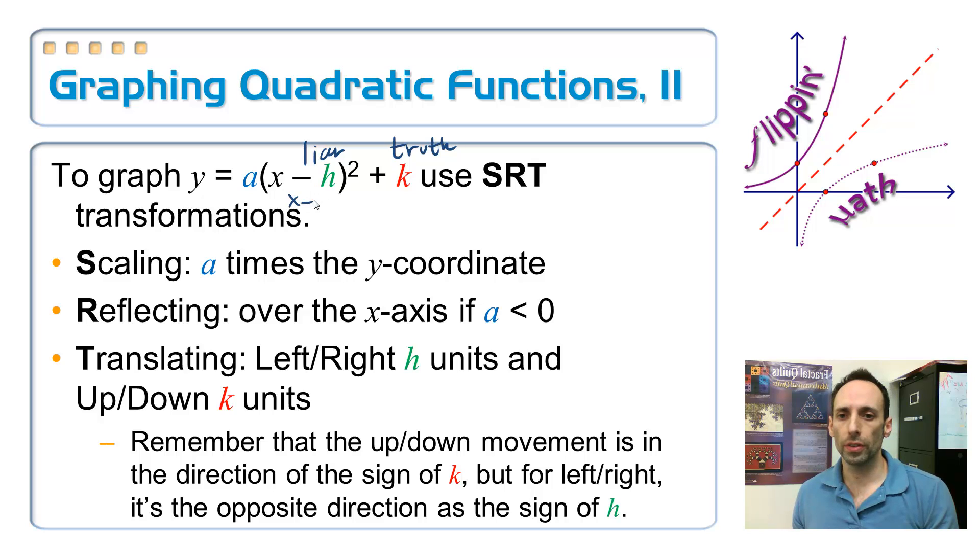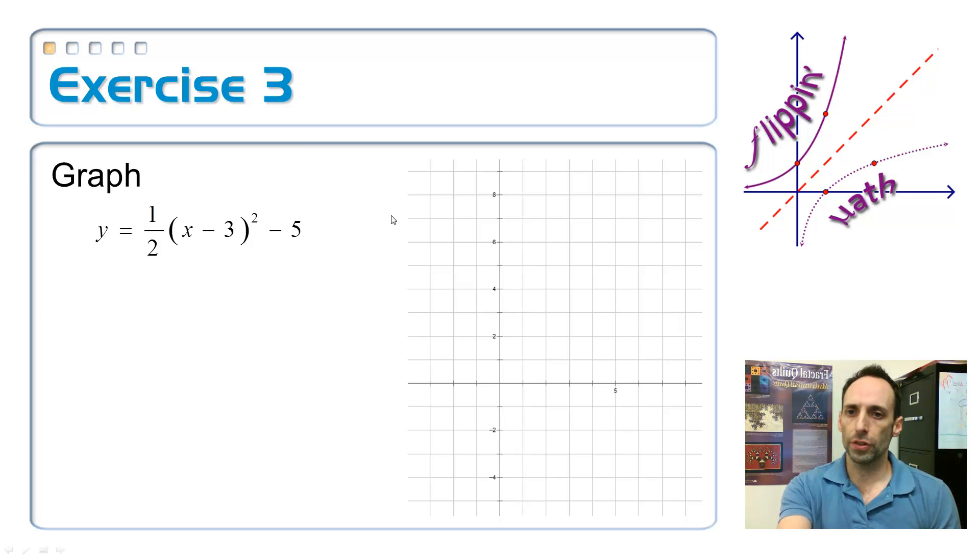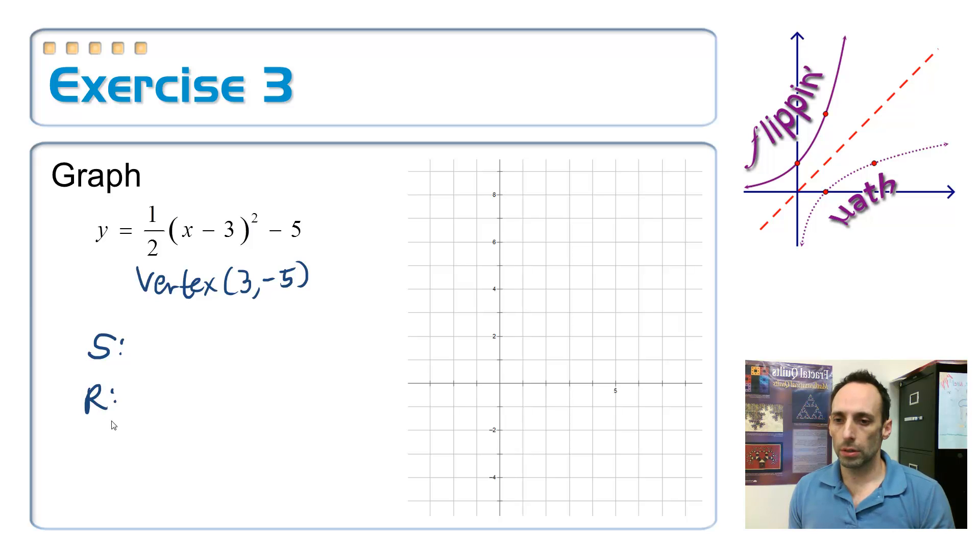Translating left or right for h, up or down for k. The x value is always in the opposite direction of that sign. Remember, it lies to you. This one's a liar. Here, this one tells the truth. For example, if this is x minus 5, I don't move left 5, I move right 5. If this was minus 5 out here, that does mean I move down 5. Keep that straight.